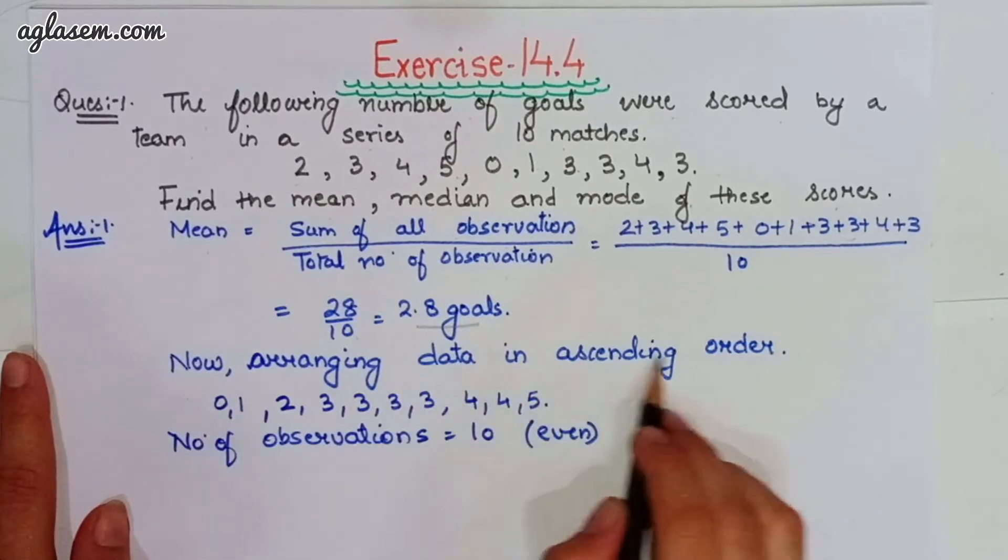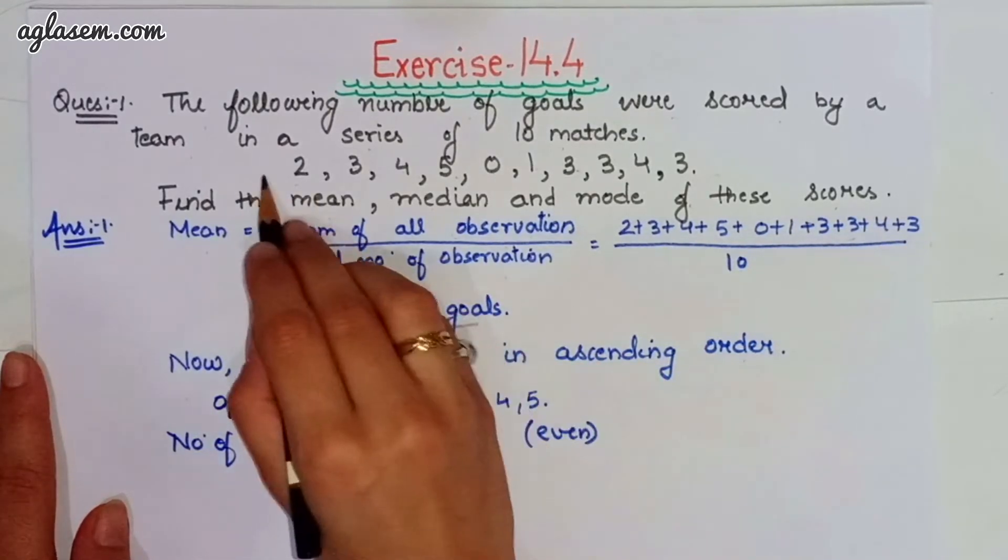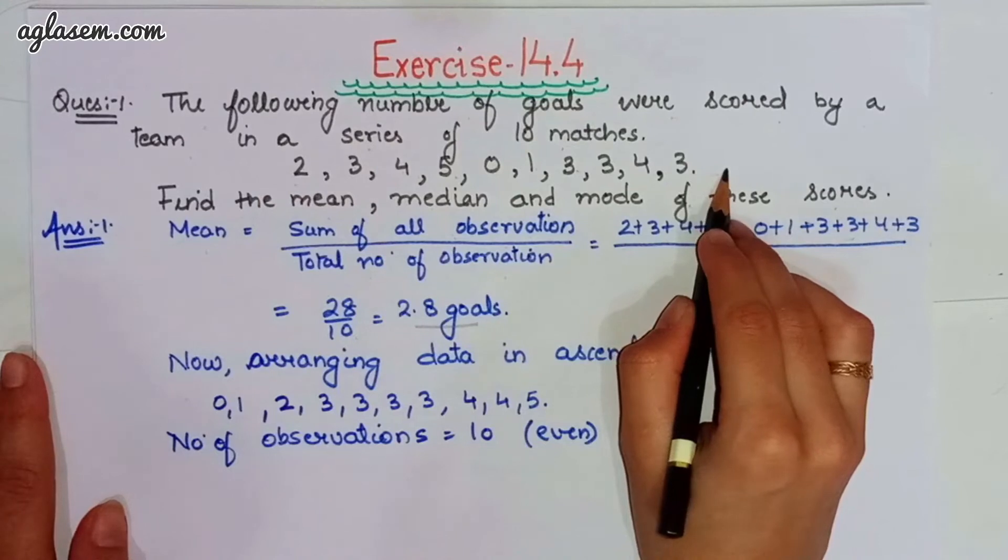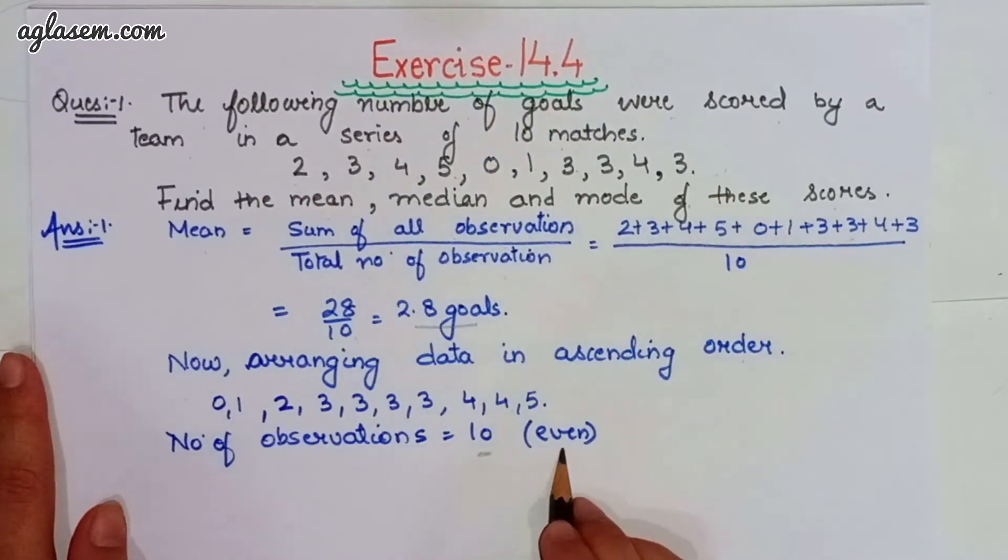Now, arranging the data in the ascending order, we have to arrange these in ascending order. So, the number of observations, that is 10, which is even.